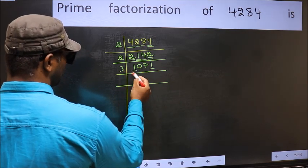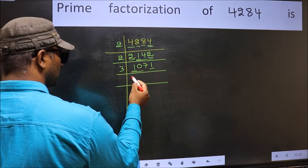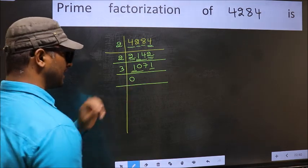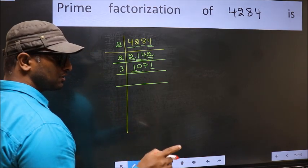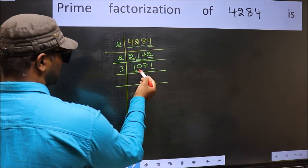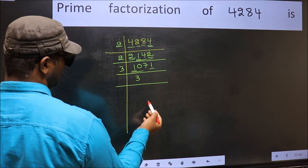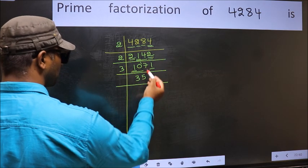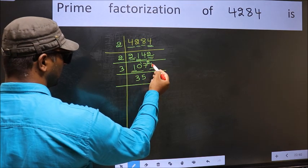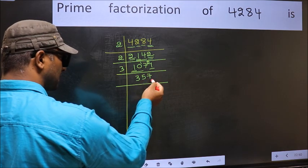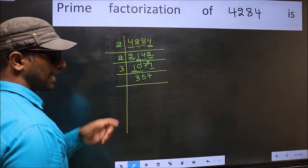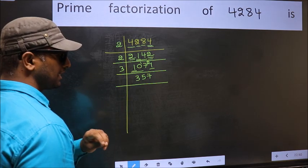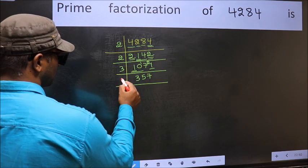First number 1 is smaller than 3, so take 2 numbers: 10. Whenever you are taking 2 numbers, compulsory put 0. But 0 at the start does not count, so no need to write 0 at the start. Anywhere else you are taking 2 numbers, compulsory put 0. Now, a number close to 10 in the 3 table is 3 times 3 is 9. 10 minus 9 is 1; 1 carried forward gives 17. A number close to 17 in the 3 table is 3 times 5 is 15. 17 minus 15 is 2; 2 carried forward gives 21. When do we get 21 in the 3 table? 3 times 7 is 21.